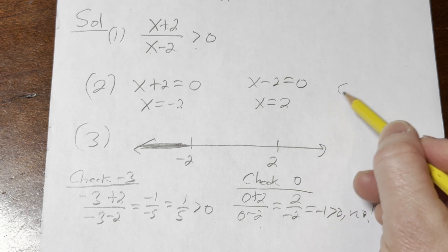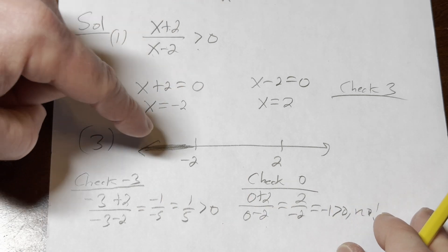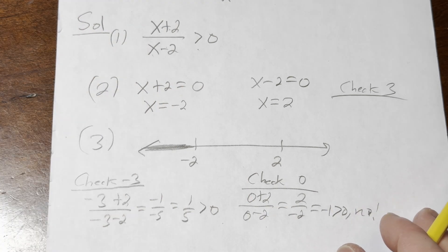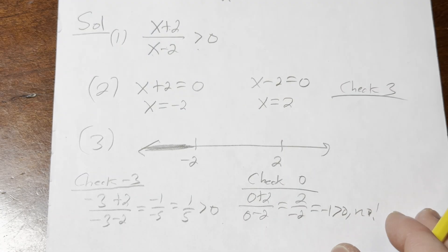And last but not least let's check 3. And you can pick any number in each sub-interval. So here I picked -3. I could have picked -1 million. Here I could have picked 0.01. I chose 0 because it's easier. Here we'll pick 3 because it's easy.